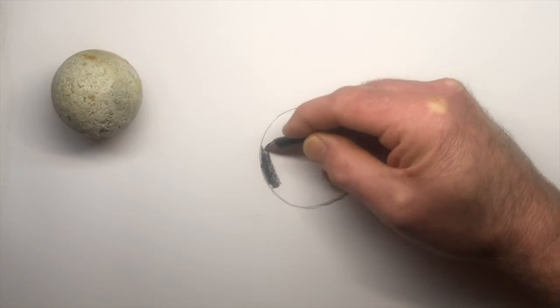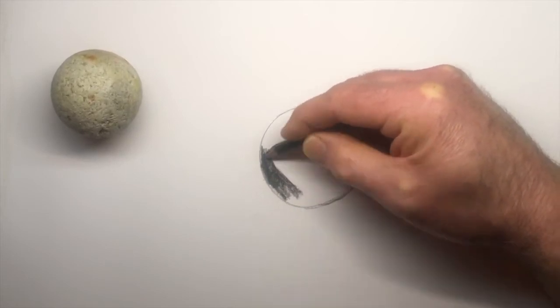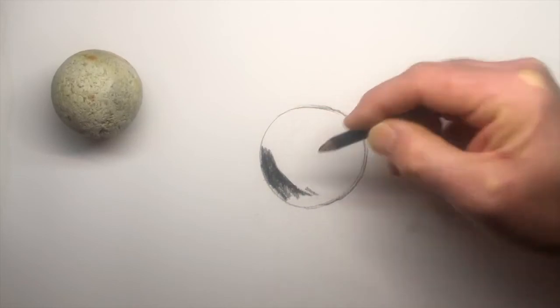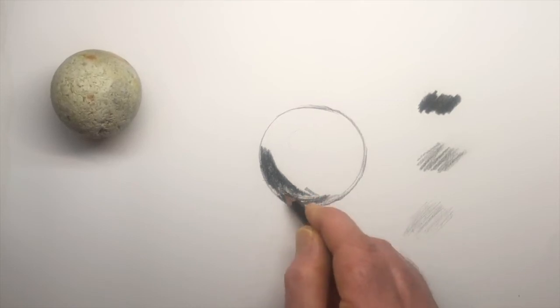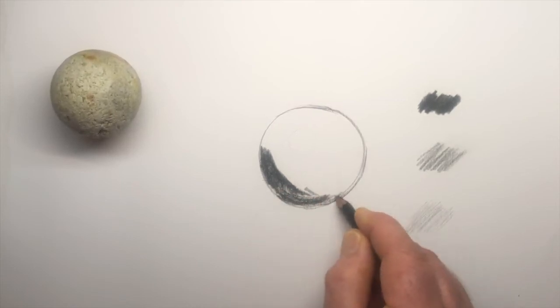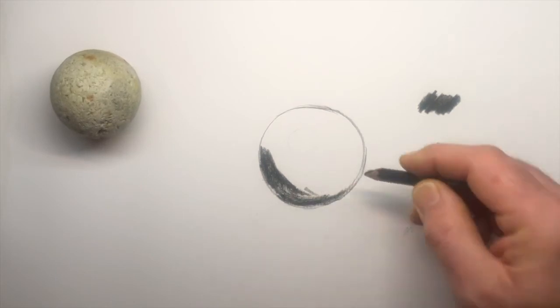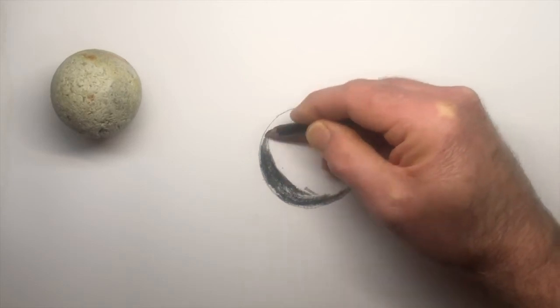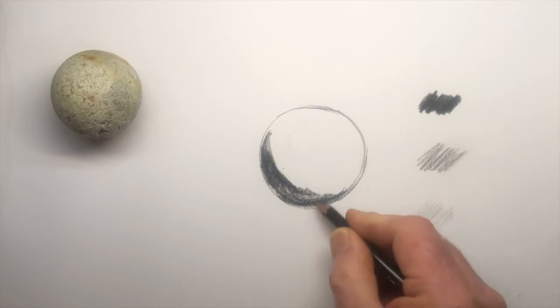Don't have to go too dark in the beginning and do it quite lightly and then gradually get dark as you go along. Just as a demonstration purpose, I'm just speeding up a little bit. I'm following the contour of that circle, following it around, just blending in some of those tones there.